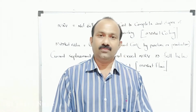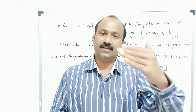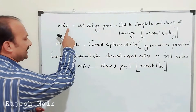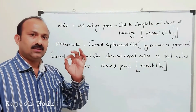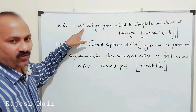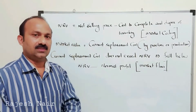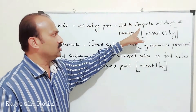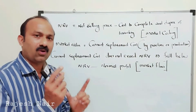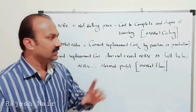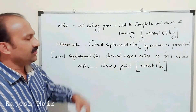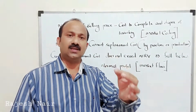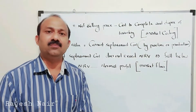In order to value the inventory, we have to understand certain terms to find out the lower of cost or market value. The first term is NRV — Net Realizable Value. How do you calculate NRV? NRV equals net selling price (sales minus any sales returns) minus cost to complete and dispose of the inventory. Any additional cost incurred to complete the product is deducted. This value is known as NRV, and it is called the Ceiling Price — the maximum price above which we cannot record inventory.